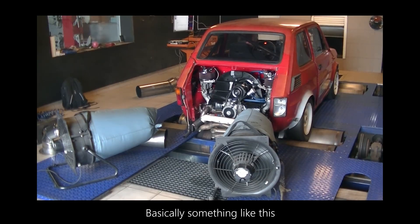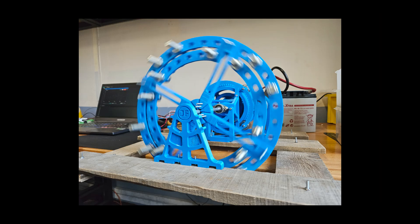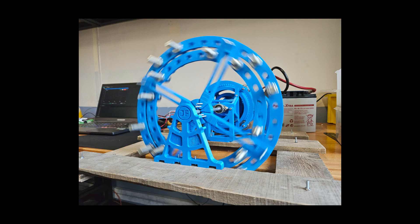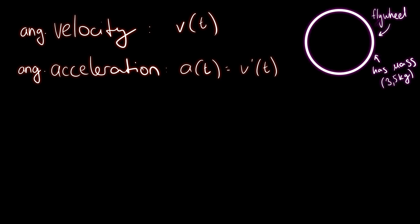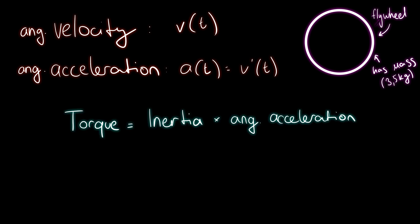I decided to build a makeshift dyno where I can measure the output power of the motor at every RPM it operates at, and at every power percentage. To measure the output power, I decided to use a flywheel. First, the acceleration of the flywheel can be calculated by taking the derivative of its speed-time function. By knowing the acceleration of the flywheel and also its inertia, which we can easily calculate, we can calculate the torque the motor is putting out.